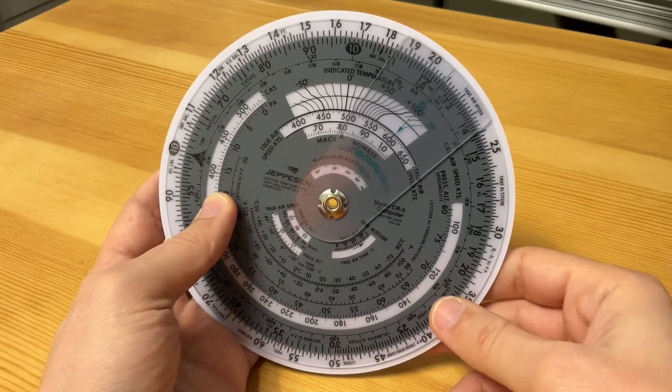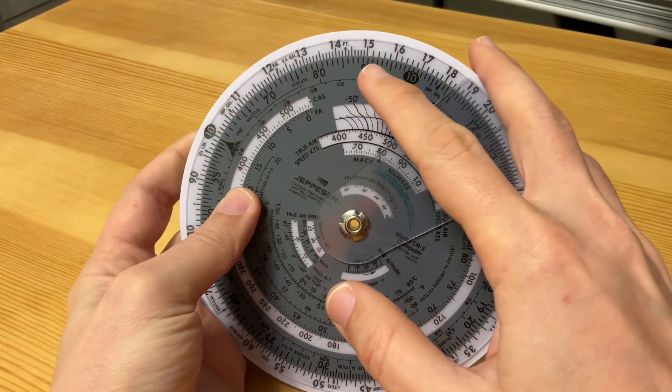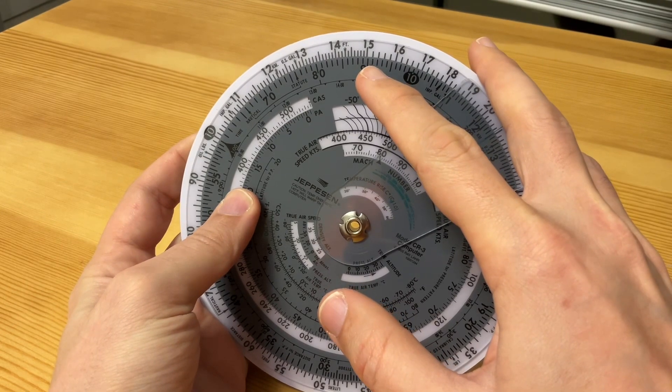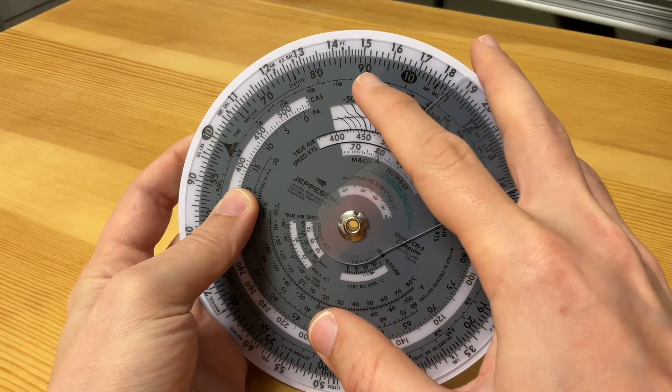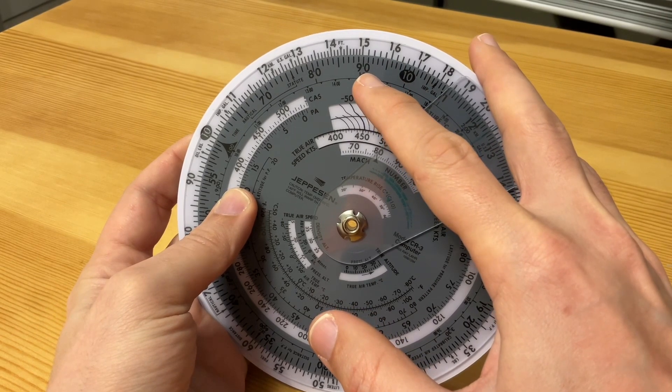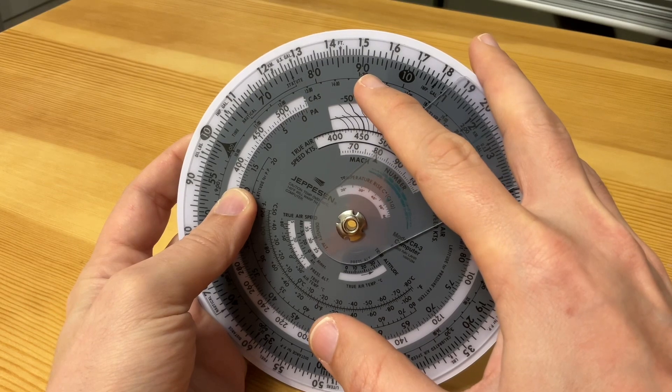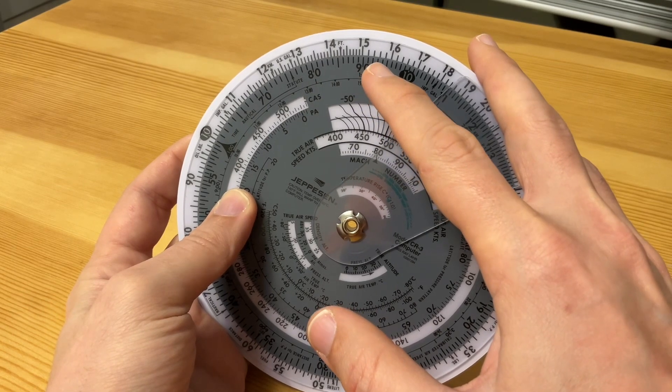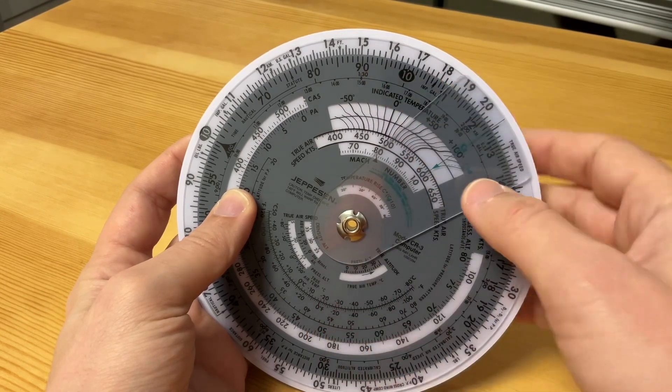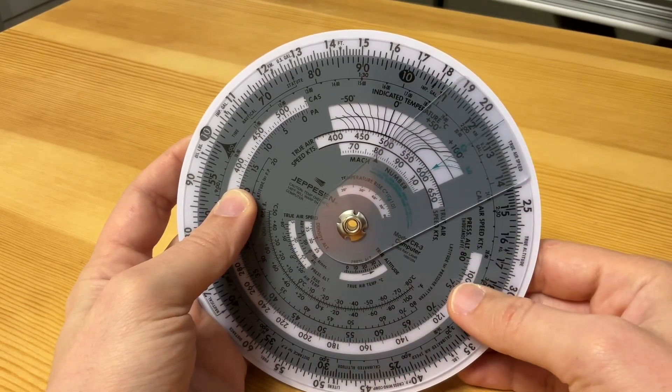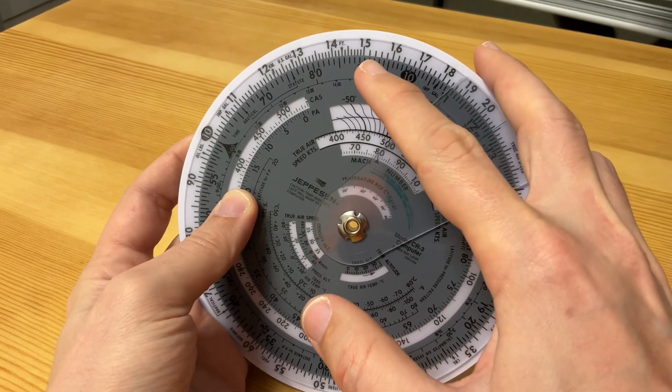Now look at the number 15 here on the outer scale. Between 15 and 16, each calibration mark equals 0.2 and would be read as 15.2, 15.4, and so on. If you were solving a problem with an airspeed of 150 knots, the first calibration past 15 would be 152.